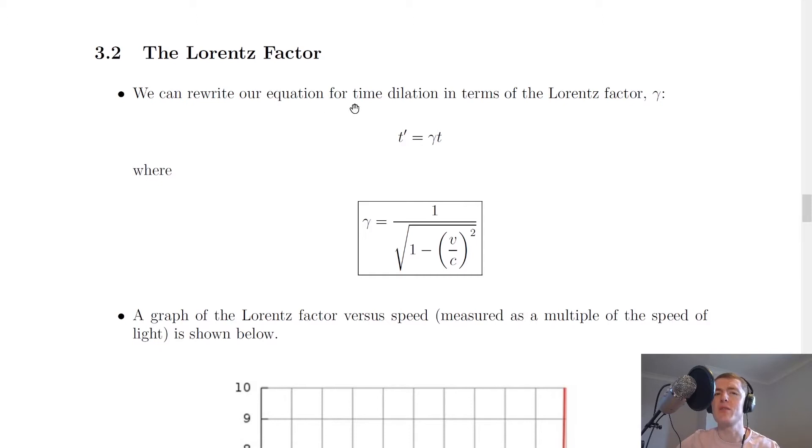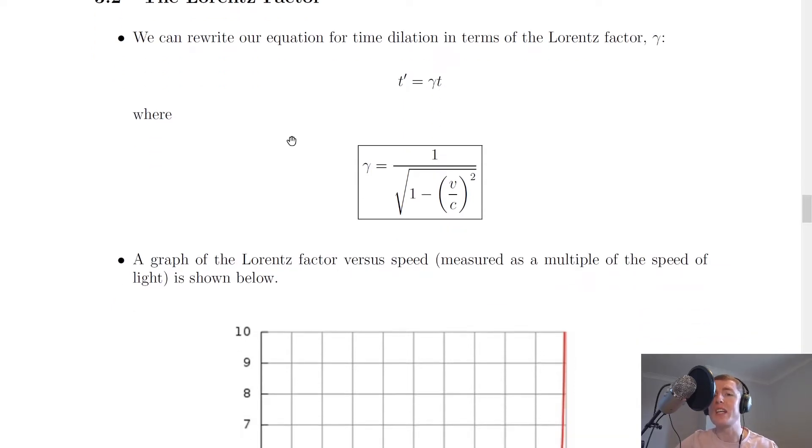It says here that we can rewrite our equation for time dilation in terms of the Lorentz factor, which we give the symbol gamma. So we say that t prime equals gamma times t, where gamma is equal to 1 divided by the square root of 1 minus v over c squared.